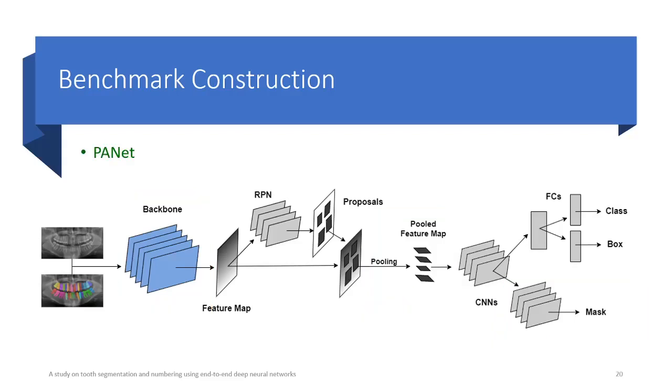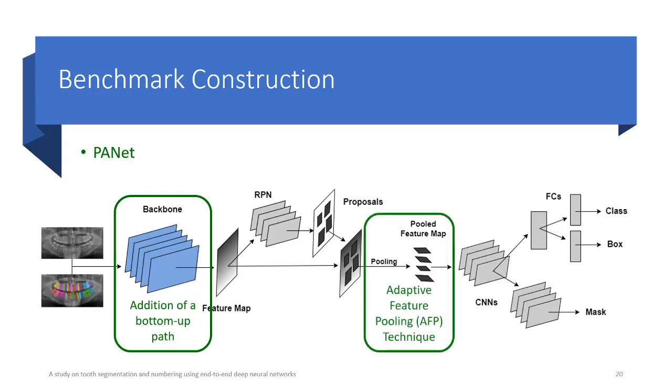The second architecture is the Path Aggregation Network or PANet, which was the COCO 2017 challenge-winner architecture on the instance segmentation task. This network introduced three novelties. The first one was the addition of a bottom-up path to the backbone. The second one was the introduction of the adaptive feature pooling technique. And the third one was the use of tiny fully-connected layers in the mask prediction branch.